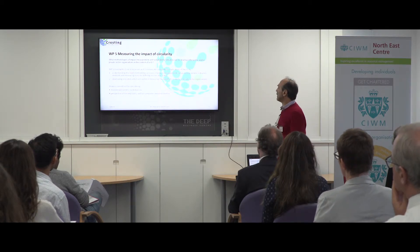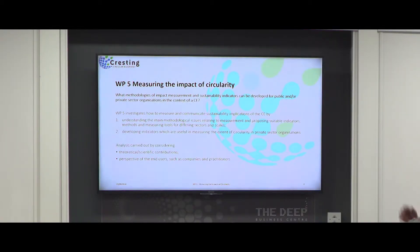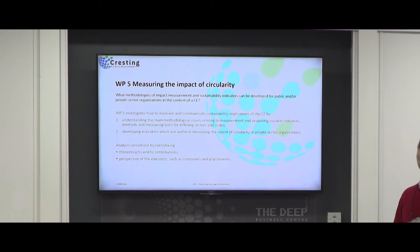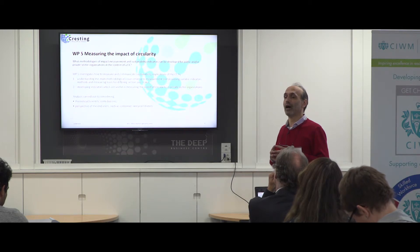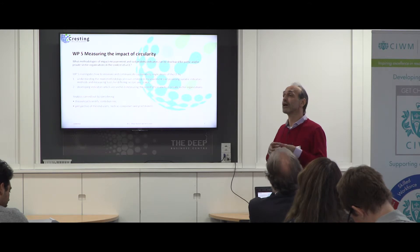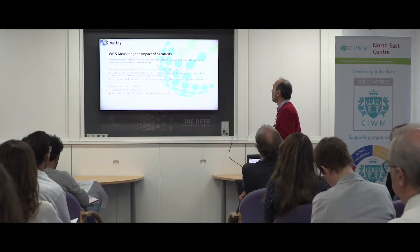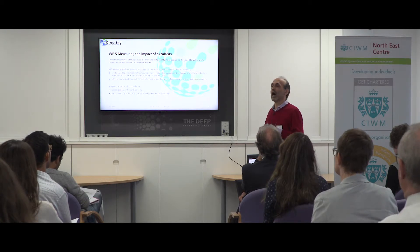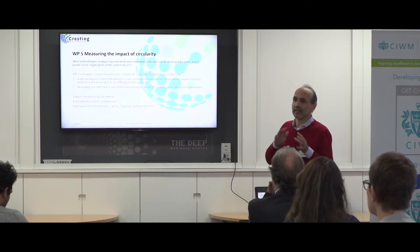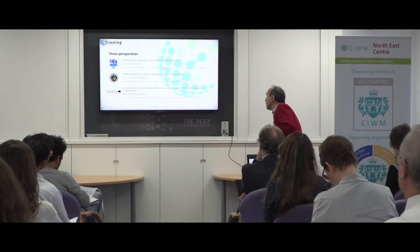We also need to be able to communicate impacts to stakeholders. Moving from this background, the overall objective of WP5 is measuring the impact of circularity — both through understanding the main methodological issues and challenges, because a number of approaches, methods, and tools are already available and have been developed over recent decades, but they need to be improved. We also have to develop indicators which can be used to easily communicate the outcome of our assessments to the general public or to given stakeholders.